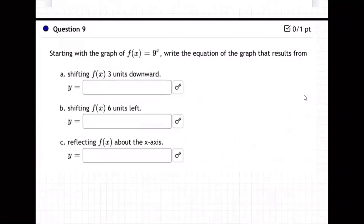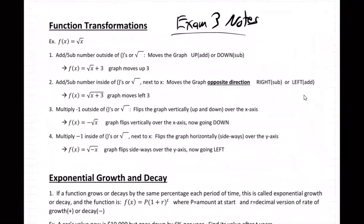So how are we going to move a graph three units downward? We're going to take the original equation f of x equals nine to the x, and to go down we need to subtract three — put minus three off to the right. Up or down means we add or subtract the number outside of the parentheses or the square root — it's not next to x.